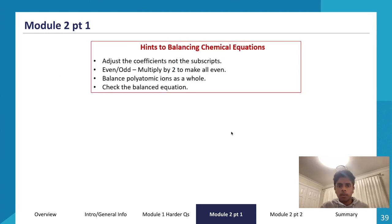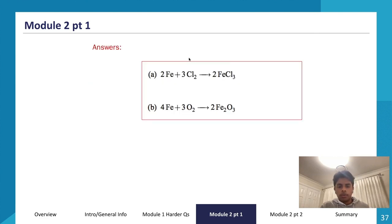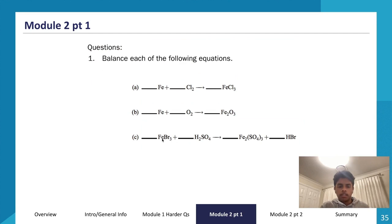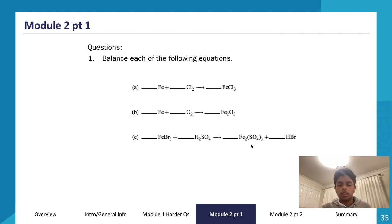A couple of hints for balancing chemical equations: make sure to adjust the coefficients, not the subscripts. We don't turn Br3 into Br6 — we leave it as Br3 and change the coefficients instead. However, we do use the subscripts to determine how many atoms of each element are present on each side. Don't ignore subscripts, but don't balance them either — balance the coefficients.